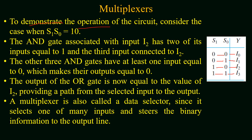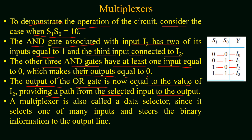To demonstrate the operation of the circuit, consider the case when S1 equals 1 and S0 equals 0. The truth table says that the I2 data line will be provided at the output. The AND gate associated with I2 has two of its inputs equal to 1 and the third input connected to I2, while the other three AND gates have at least one input equal to 0, making their output 0. The output of the OR gate is now equal to the value of I2, providing a path from the selected input to the output. Due to this feature, the multiplexer is also known as a data selector since it selects one of the many inputs and steers the binary information to the output line.